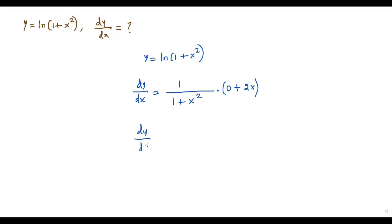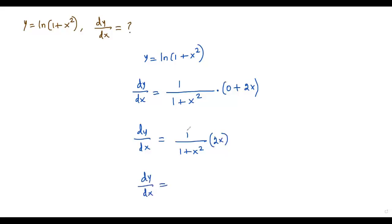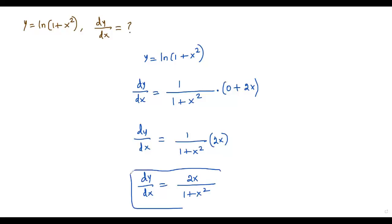So dy over dx equals 1 over (1 plus x squared) times (0 plus 2x), which simplifies to 2x over (1 plus x squared). This is the derivative of the given function with respect to x.